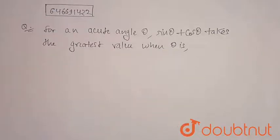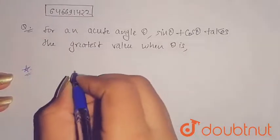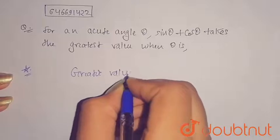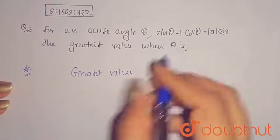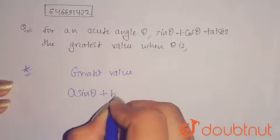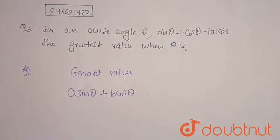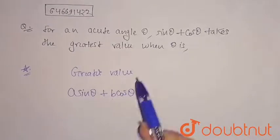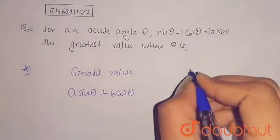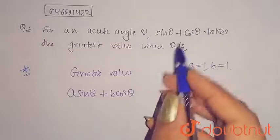So there is a formula for finding the greatest value. This equation can be written as a sine theta plus b cos theta. This is my equation of finding the greatest value. If I compare this equation with this equation, at the place of a I am having one, at the place of b I have one.